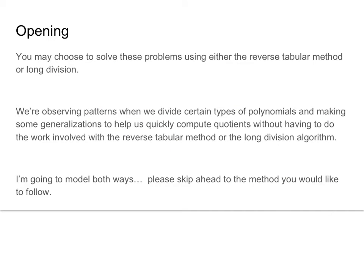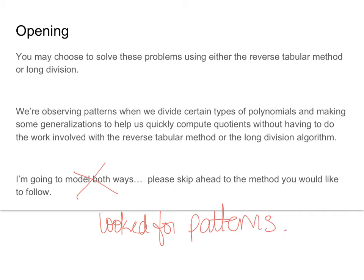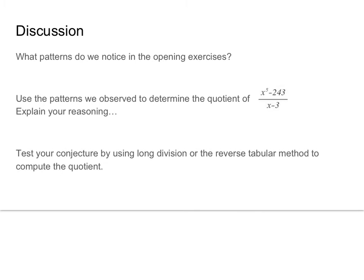What we just did was look for patterns rather than model both ways. That's really what you want to do — it's going to save you time and it's going to help your accuracy. What patterns did we notice in the opening exercise? Use the patterns we've observed to determine the quotient. Explain your reasoning.